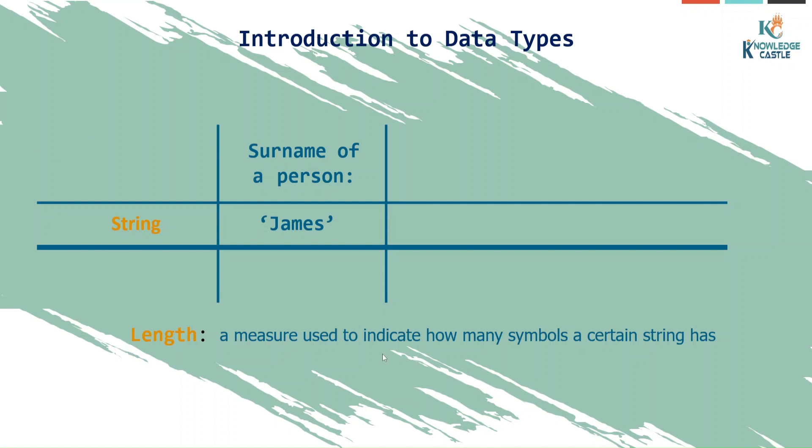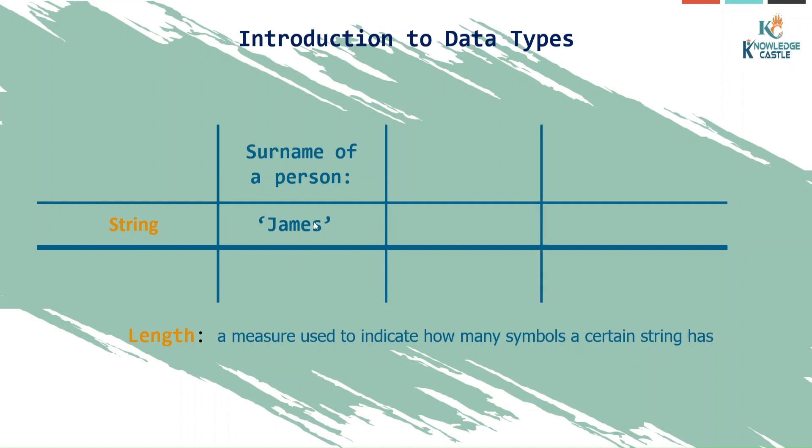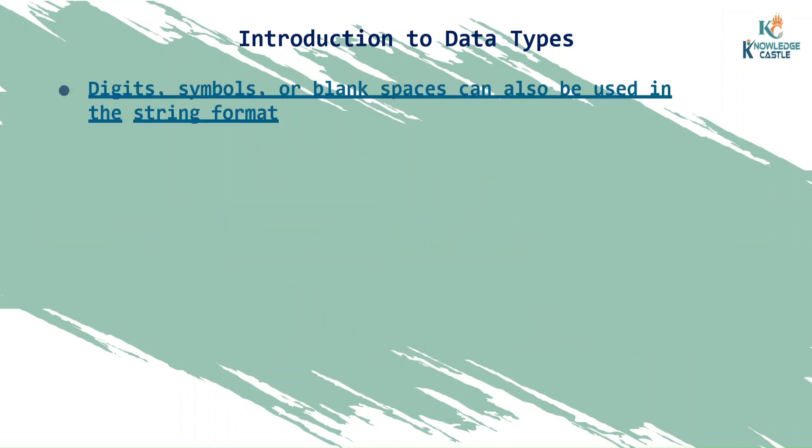One thing we need to be very sure of is length. What is length? A measure used to indicate how many symbols a certain string has. Can you count how many characters James has? Five symbols. And Jackson? Seven symbols.